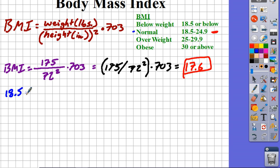So we're going to take 18.5 and we're going to add 24.9. And we're going to divide that by 2. And we end up with what? 43.4 divided by 2. And that turns out to be 21.7. So we're going to call that our ideal BMI. So 21.7.